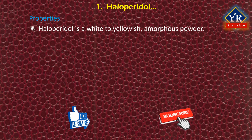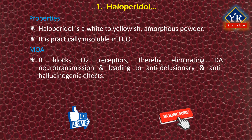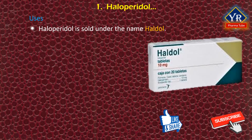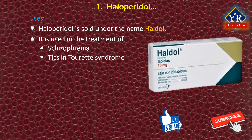Haloperidol is a white to faintly yellowish amorphous or microcrystalline powder. It is practically insoluble in water and is stored in tightly closed, light-resistant containers. Haloperidol competitively blocks post-synaptic dopamine D2 receptors in the mesolimbic system of the brain, thereby eliminating dopamine neurotransmission and leading to anti-delusionary and anti-hallucinogenic effects. Antagonistic activity mediated through dopamine D2 receptors in the chemoreceptor trigger zone accounts for its antiemetic activity. Haloperidol is sold under the brand name Haldol and is used in the treatment of schizophrenia.